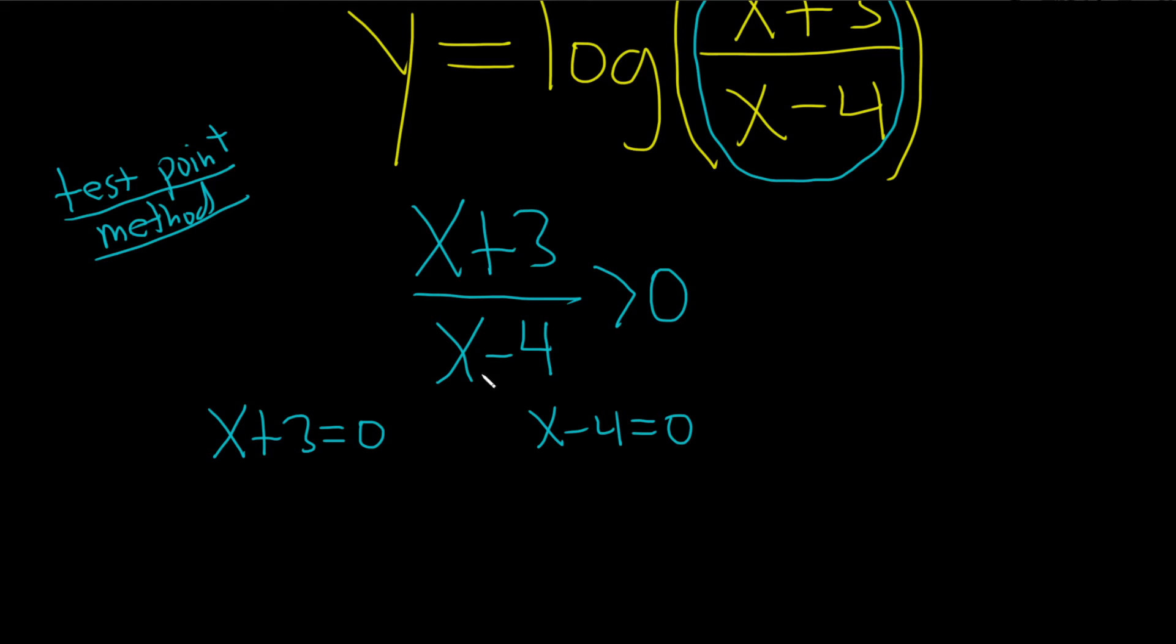Step 2, set each piece equal to 0. Then you solve. So here we get negative 3, and then here we get 4.